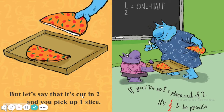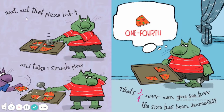But let's say that it's cut in two, and you pick up one slice. If you've got one piece out of two, it's one half, to be precise. Next, cut that pizza into four, and take one single piece. That's one fourth now. Can you see how the size has been decreased? The more pieces you cut the pizza in, the smaller the size you get.